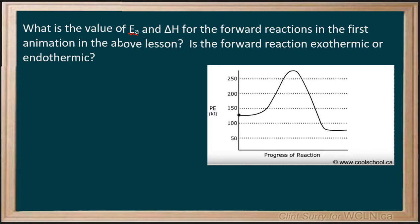When we look at our graph, we can see the peak of where this graph goes to, and we can see the point from where we started. From where we're starting, it looks to be about 125. Where it goes to up at the top, 275. The difference between those two will be our energy of activation — where does it start and where does it end.